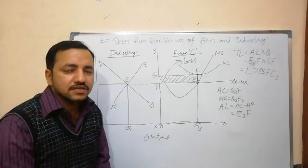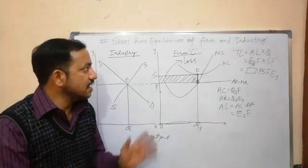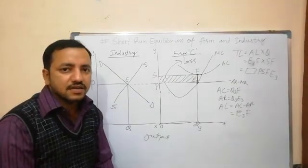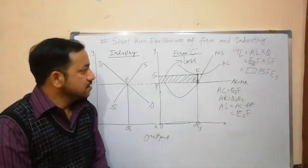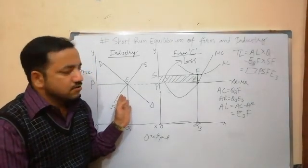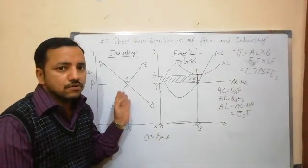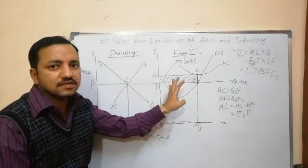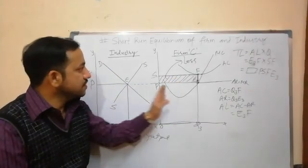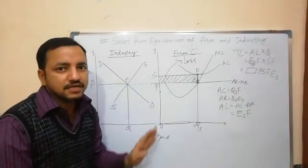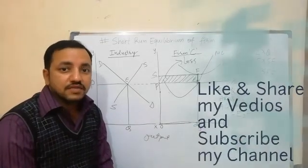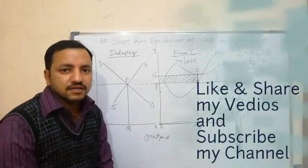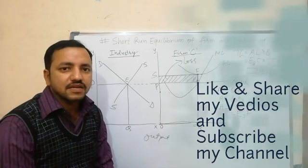By fulfilling these necessary conditions, we can describe the short run equilibrium of firm and industry. In the examination, we have to draw four diagrams in the same line: industry, Firm A, Firm B, and Firm C. Please like and share my videos and subscribe to my channel. Thank you very much.